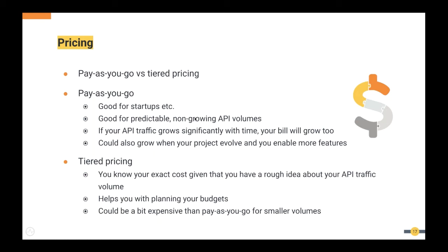In the tiered pricing model, there are pricing tiers, each with a limit on API volumes — for example, tier A allows 10 million API calls, tier B allows 50 million, and tier C allows 100 million. If you're in tier A, you know your price stays the same every month unless your API volume goes beyond 10 million. This helps you plan your budget. It may sometimes look more expensive than pay-as-you-go for smaller volumes, depending on the vendor's pricing tiers.